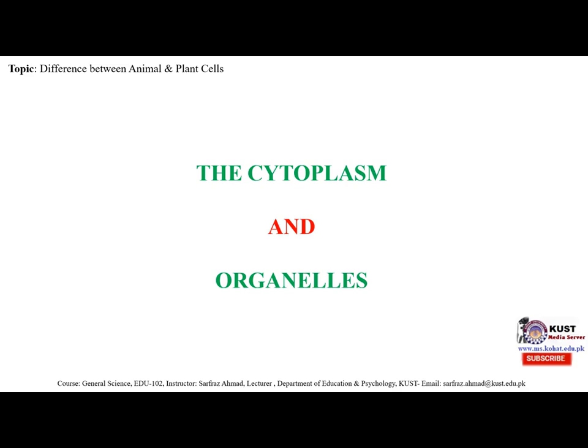A cell organelle is a specialized entity present inside a particular type of cell that performs a specific function. Some organelles are common in most types of cells, like cell membranes, nucleus, and cytoplasm. In eukaryotic organisms, nearly every cell has a nucleus — exceptions include mammalian red blood cells. Other common organelles include mitochondria, plastids, endoplasmic reticulum, Golgi apparatus, lysosomes, and vacuoles.